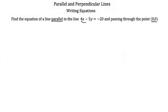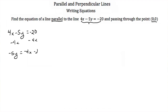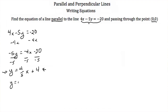This is written in standard form. Let's write it in slope-intercept form and try to get the slope. We start with 4x minus 5y is equal to negative 20. Subtracting 4x from both sides gives us negative 5y is equal to negative 4x minus 20. Dividing everything by negative 5 to get y by itself, we get y is equal to 4/5 x plus 4. The slope of the line 4x minus 5y equals negative 20 is 4/5.